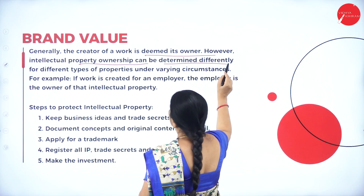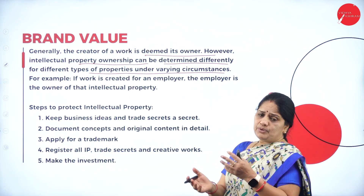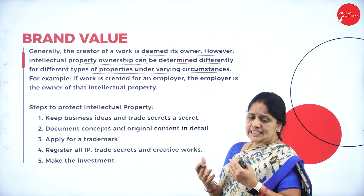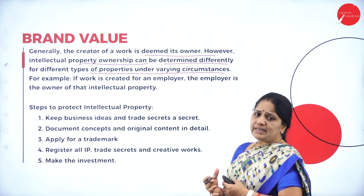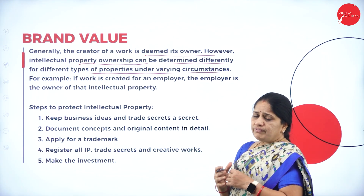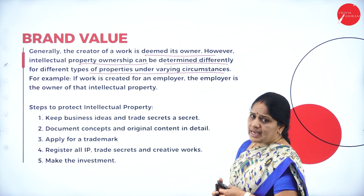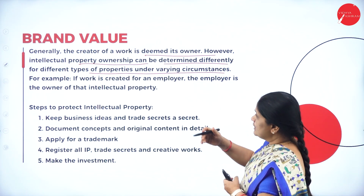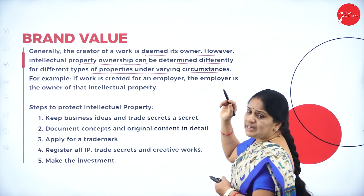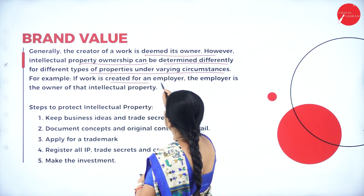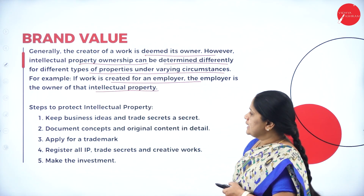Intellectual property ownership can be determined differently for different types of properties under varying circumstances. For example, if it is a musician, whatever musical piece he creates will be exclusively his own — he carries the copyright of that music, and anyone who wants to use it must pay him. If the work is created for an employer, the employer is the owner of that intellectual property.